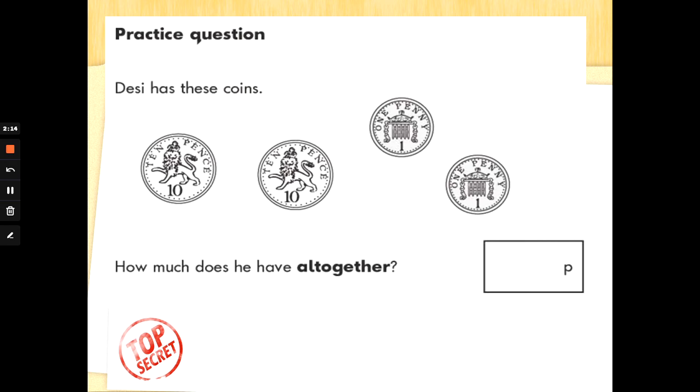Now, we're going to be talking about money. There can be lots of different questions involving money on the reasoning paper. Sometimes it can just be adding coins up. It can be picking the largest coin. It can be working out change. But we're going to start and have a little look together. And we're going to be doing lots of practice at school. So don't worry.